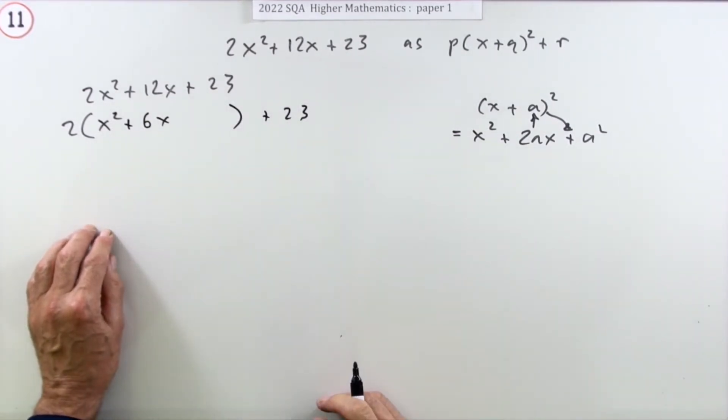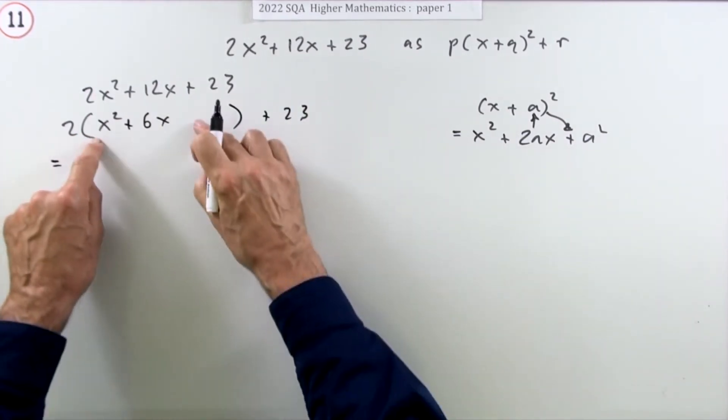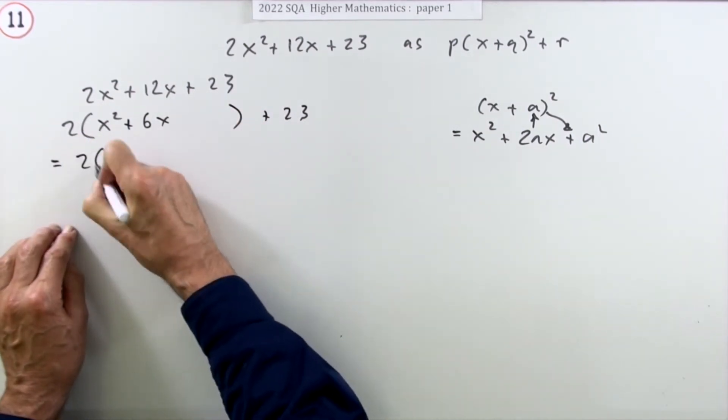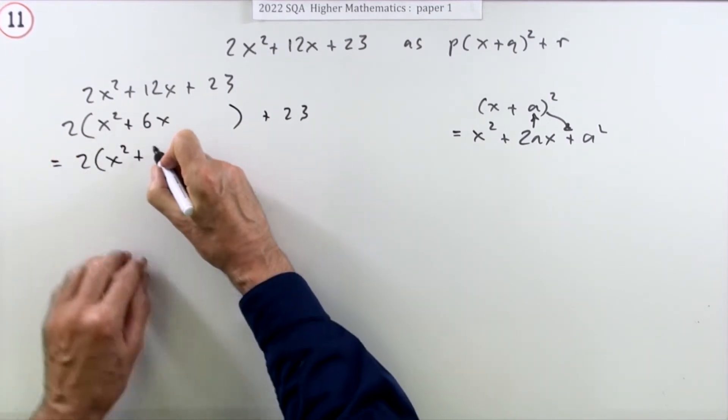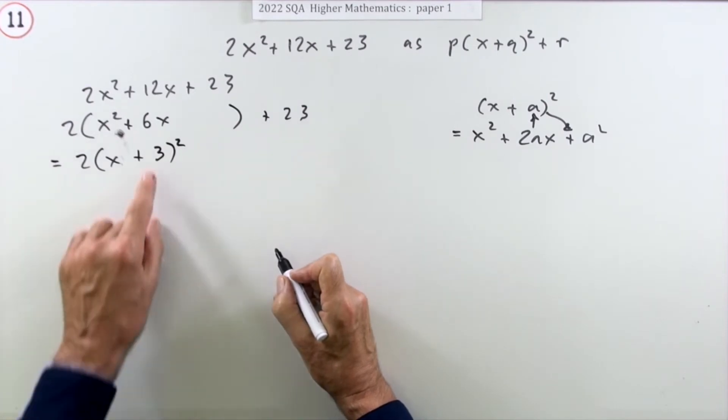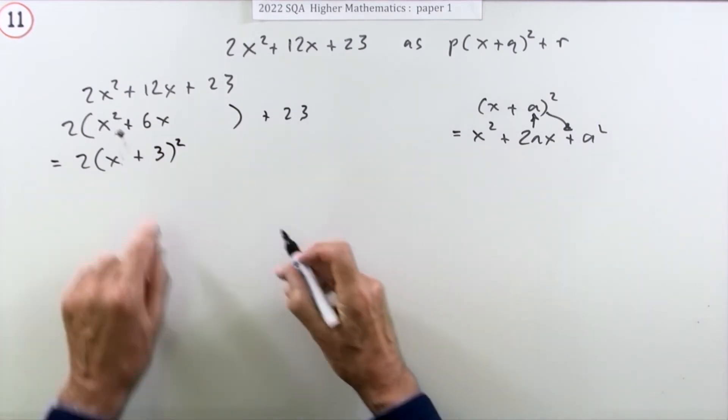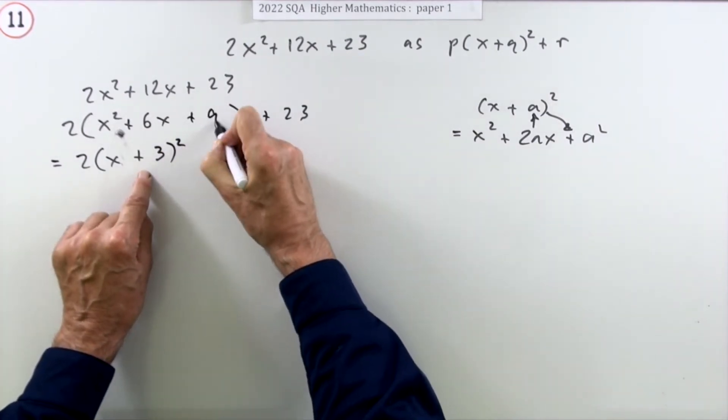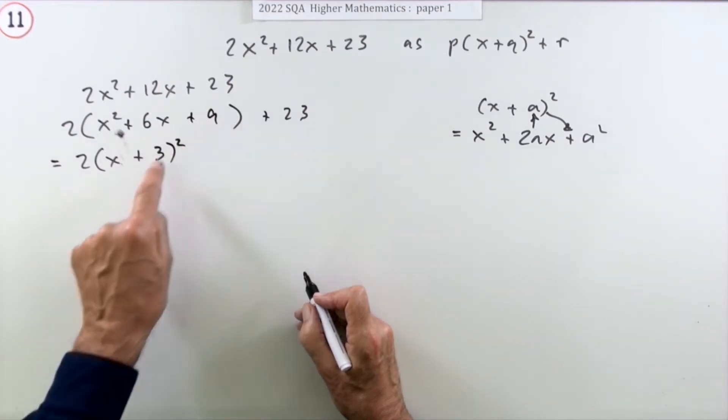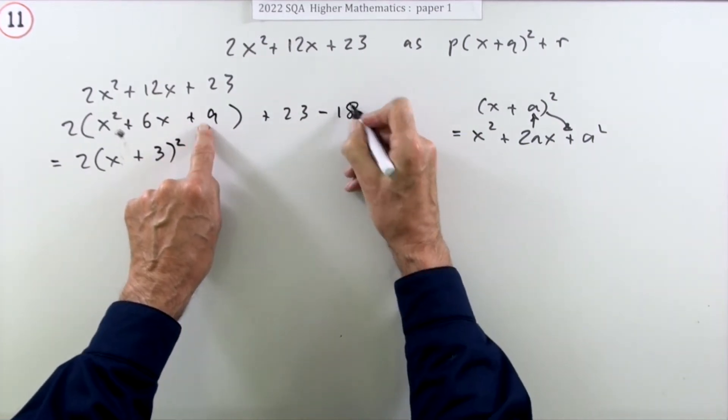Taking two out as a factor, that knocks that down to a six. Now I'm leaving the 23 out of it. I've left a space here because I'm going to form a square. I immediately know what the square is because that's double the number that should be in the bracket. So I also know that if that's half of that number, that should be the square of it there. So I take that up and put a nine in there. That's what I needed. I didn't have that nine, so I've got to put in a nine here to form this, but there's really two nines, so I've put in an 18, so I'll have to take away the 18.